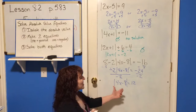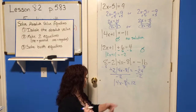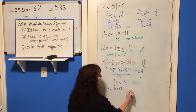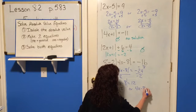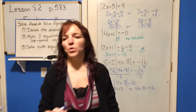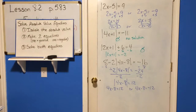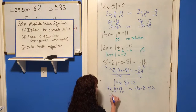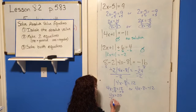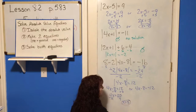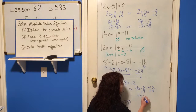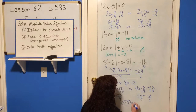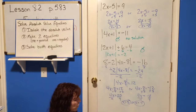Now we have isolated the absolute value — that's Step 1 done. Step 2: set up two equations. Either 4x minus 8 equals 12, or 4x minus 8 equals negative 12. Now solve them. Add 8 to both sides: 4x equals 20, divide by 4, x equals 5. Or add 8 to both sides of the second: 4x equals negative 4, divide by 4, x equals negative 1. Those are your two solutions: 5 or negative 1.